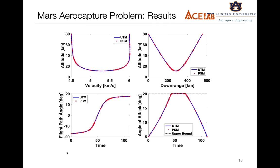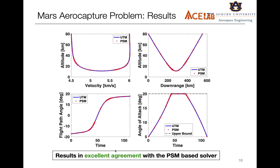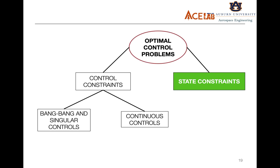When I solve this problem using the UTM as well as the pseudo-spectral method-based solver GPOPS2, the results match and are in excellent agreement. The constraint upon the control is active for a certain amount of time, as you can see in the picture.